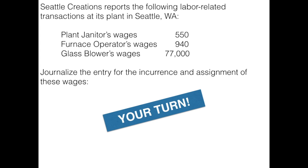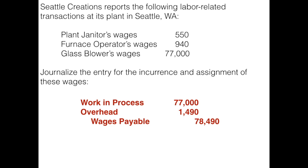So the only direct labor in this list is the glass blower wages. That $77,000 is the only amount that goes directly into work in process. The other two labor items go into overhead. The journal entry has a debit to work in process of $77,000, a debit to overhead for the plant janitor and furnace operator wages, and a credit to wages payable for the entire total.